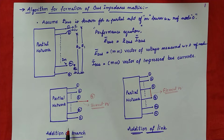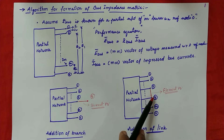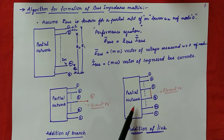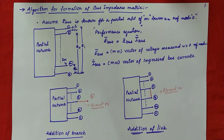For the branch case, the algorithm will be different from the link case. If you connect an element and no new node is formed, then the element will be called an addition of link. If Q is an existing node or bus of the partial network, then this element is considered addition of a link. So this is the basic idea: this is the partial network, this is addition of branch, and this is addition of link.